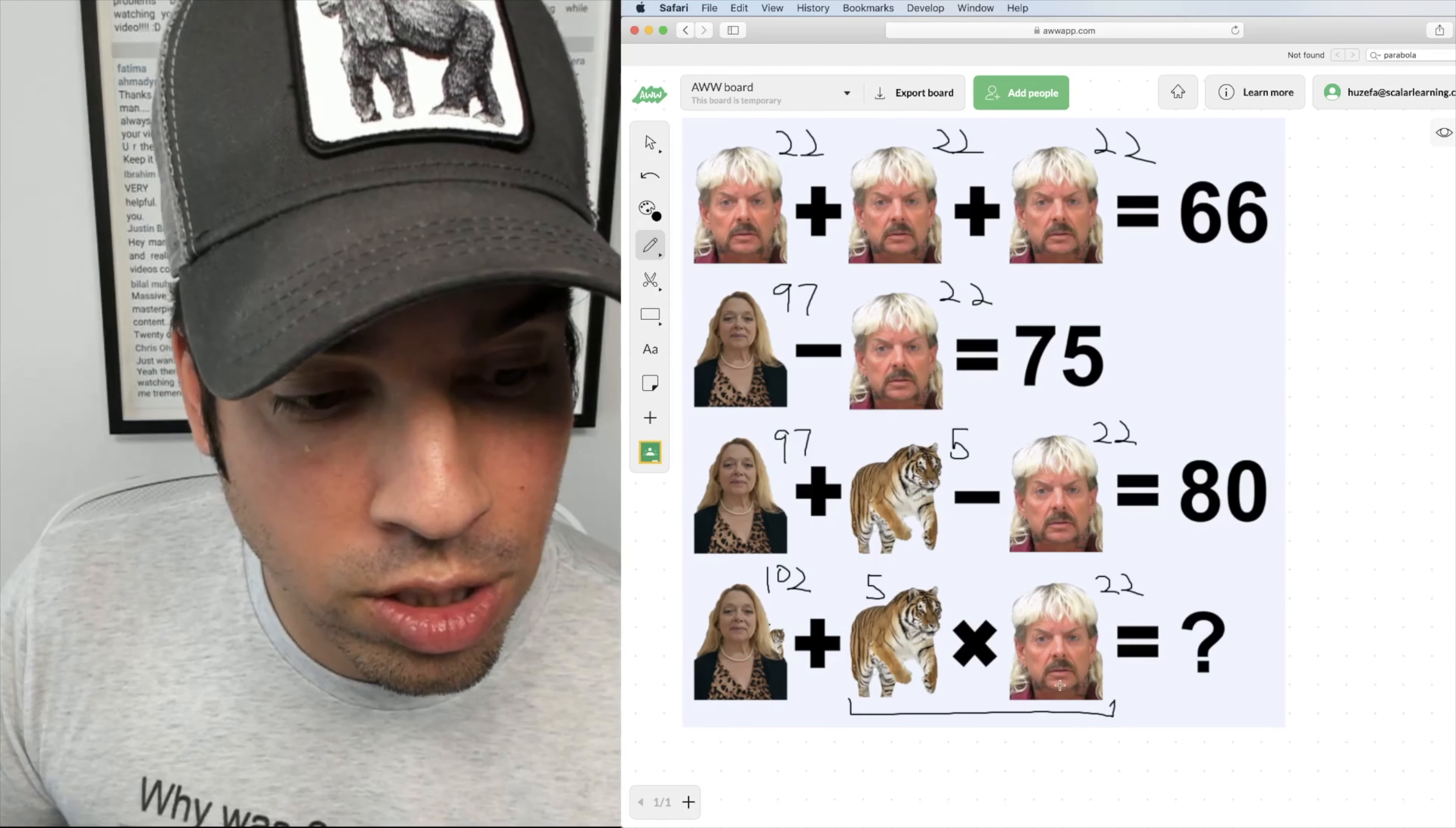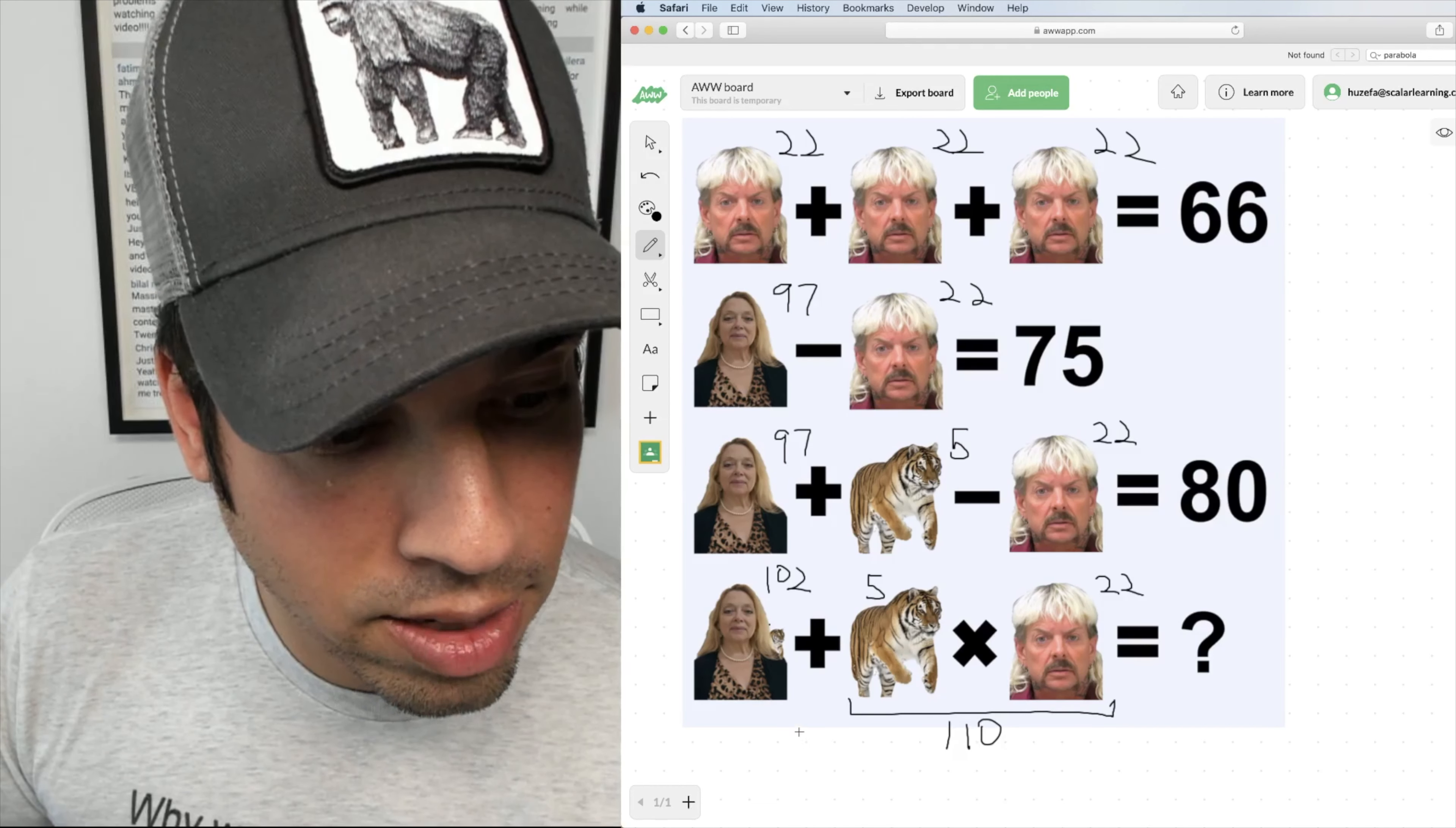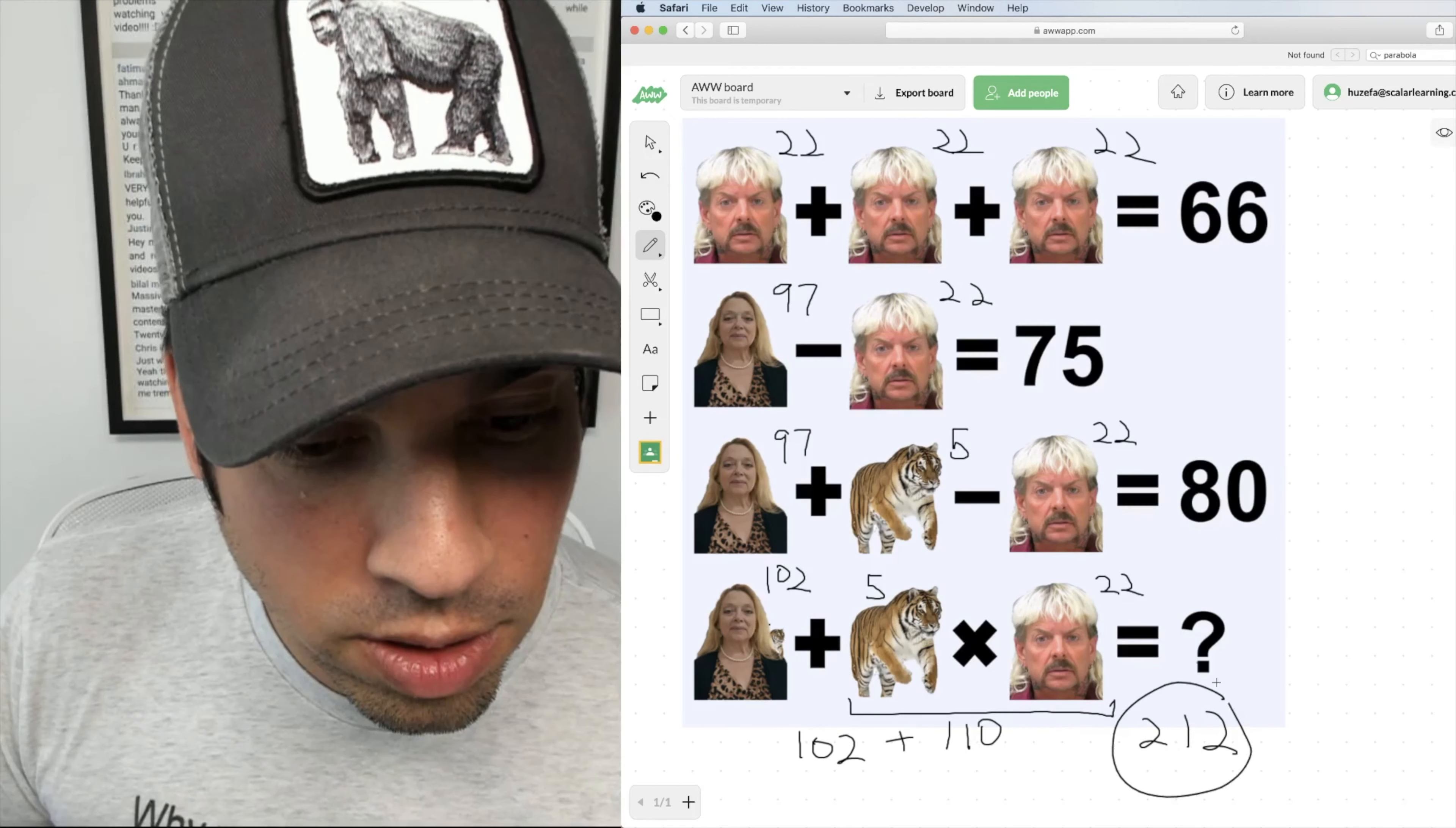So first we do 5 times 22, which is 110, then we add the 102, and we get a final answer of 212.